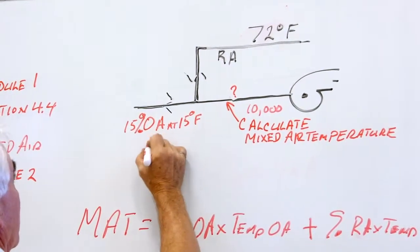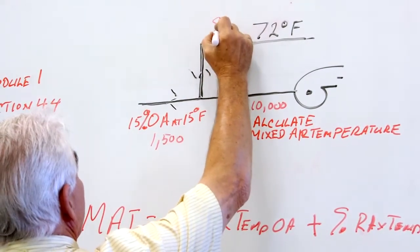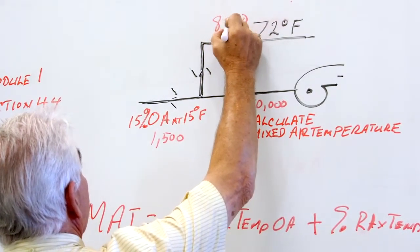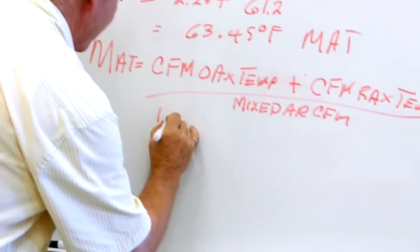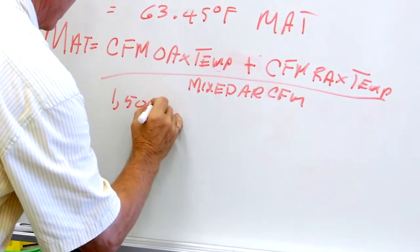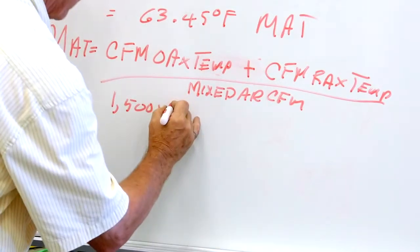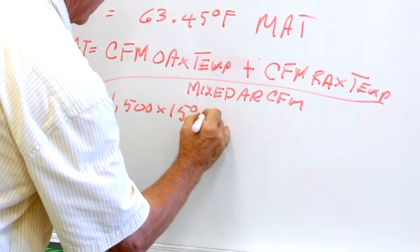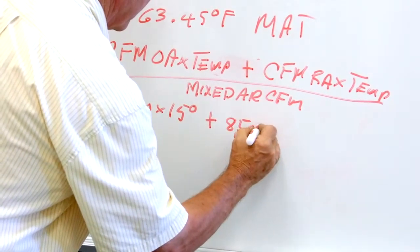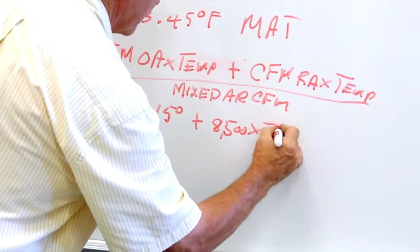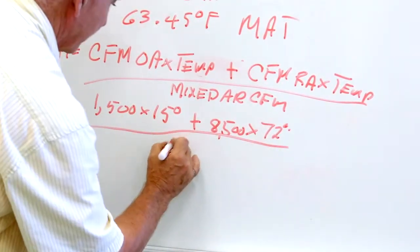15% would be 1,500 and this would be 8,500 CFM, so we'd have 1,500 times 15 degrees, plus 8,500 times 72 degrees, divided by 10,000.